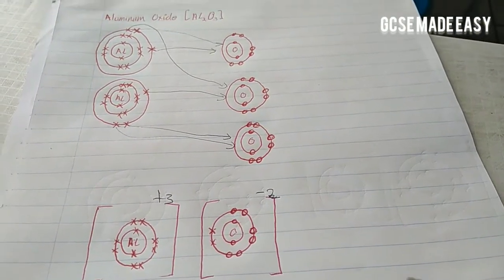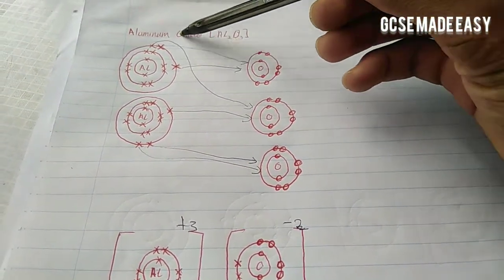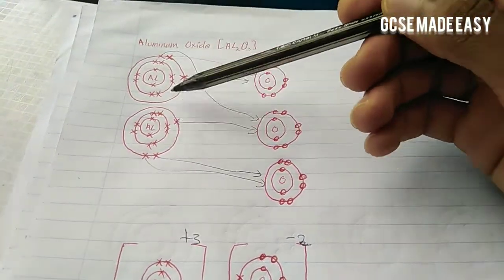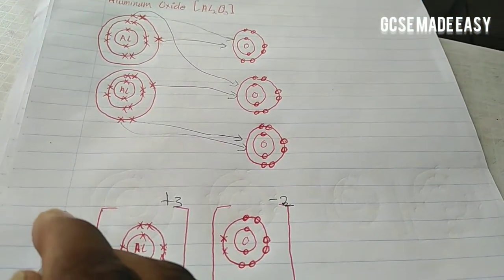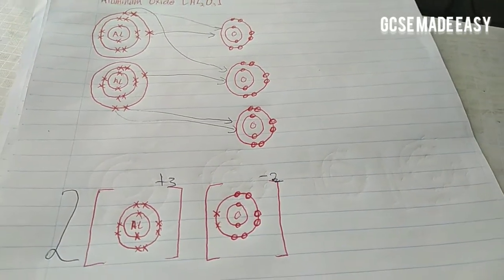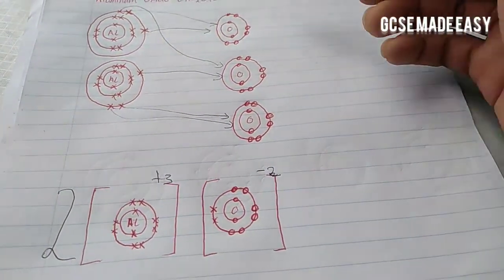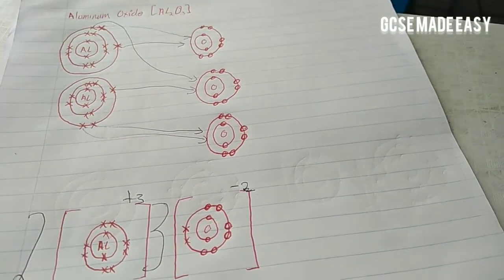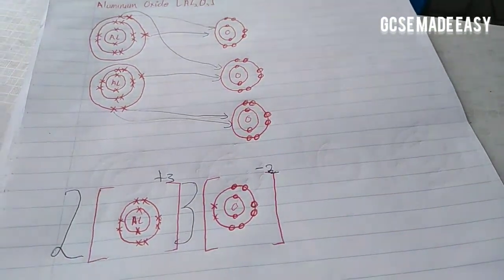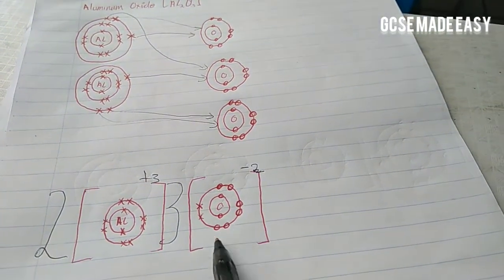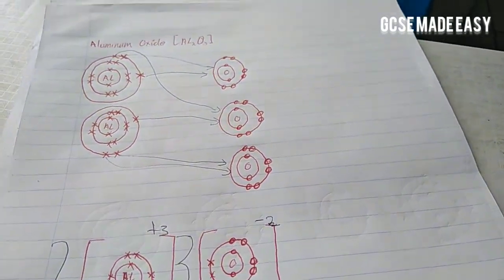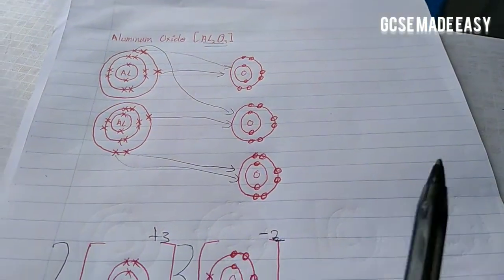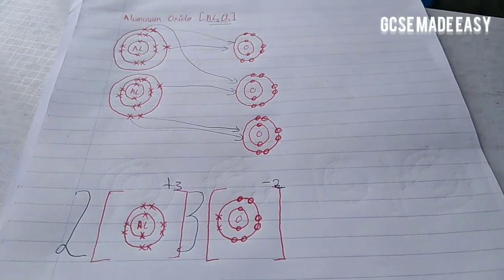From our demonstration, we have two aluminiums — shown by writing a large '2' by aluminium — and three oxygens — shown by writing a large '3'. This tells us that two aluminiums and three oxygens combine to give us aluminium oxide, Al₂O₃.